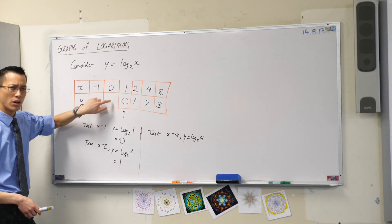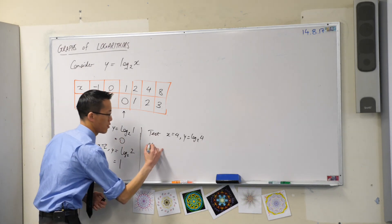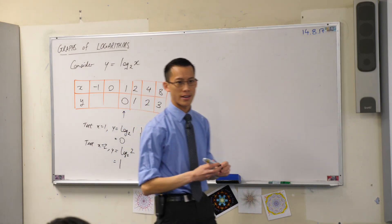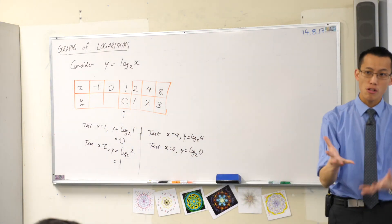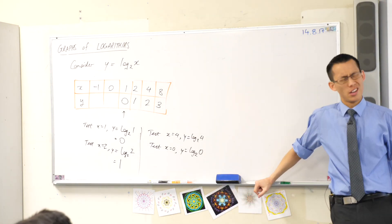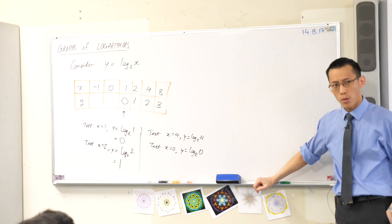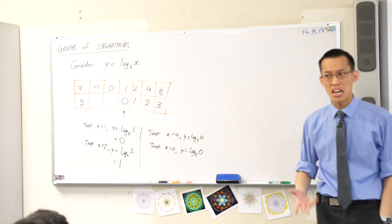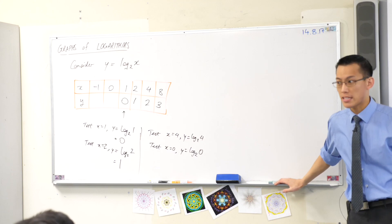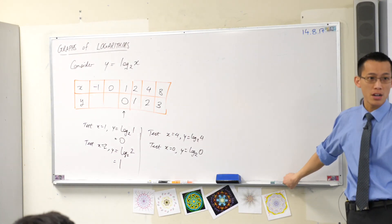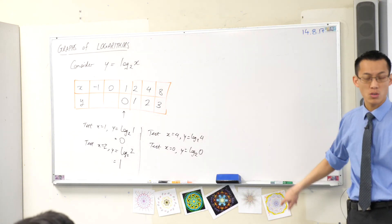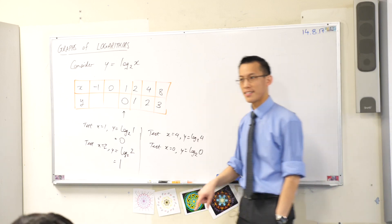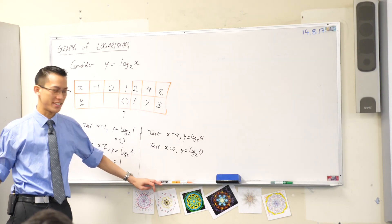Now let's look at what's happening over here, because this is not what you expect. Let's test x equals 0. If x is 0, y is going to be log base 2 of 0. Put your pen down for a moment — what does this mean? 2 to the power of something gives you 0. We already know 2 to the power of 0 is 1, so 0 is not it. How about a negative number? 2 to the power of negative 1 is a half. 2 to the power of a half is the square root of 2, about 1.4. We're not getting 0. In fact, there's no number you can raise 2 to that gives you 0. What you've done is shown the limitation of your calculator, not found the answer.